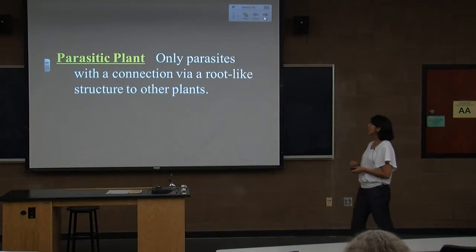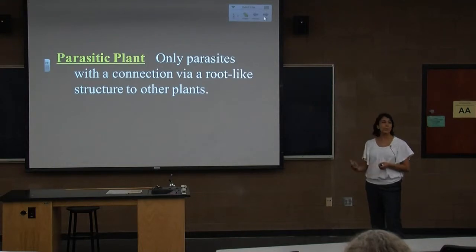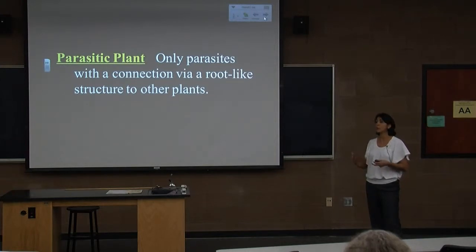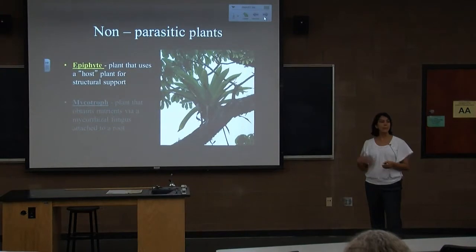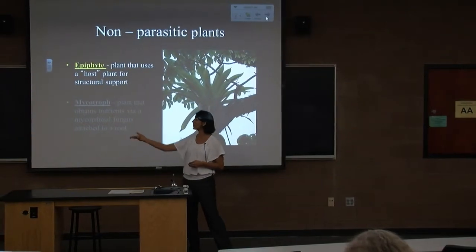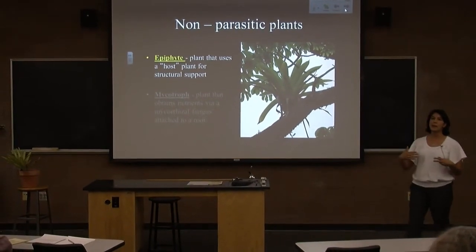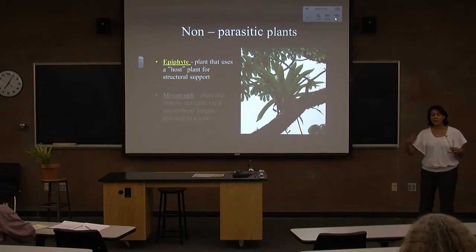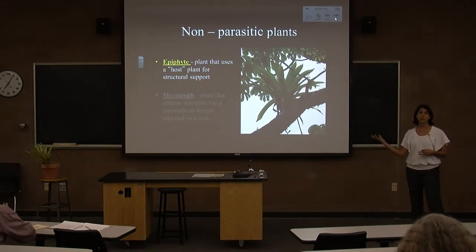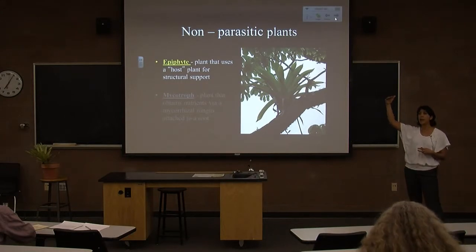The definition of a parasitic plant is one that has a connection through a root-like structure to other plants. There are some things people confuse with parasites — one of them is a bromeliad, which is an epiphyte. Another example is vines, ivy, things that use another plant for structural support. They don't actually harm the host; they use it to get higher in the canopy to get more light.